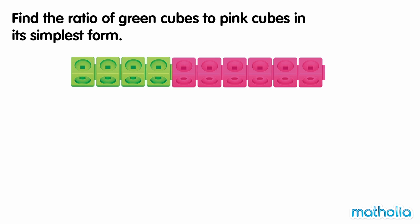Find the ratio of green cubes to pink cubes in its simplest form. There are 4 green cubes and 6 pink cubes. The ratio of green cubes to pink cubes is 4 to 6. We can simplify ratios by dividing each part by the same number.